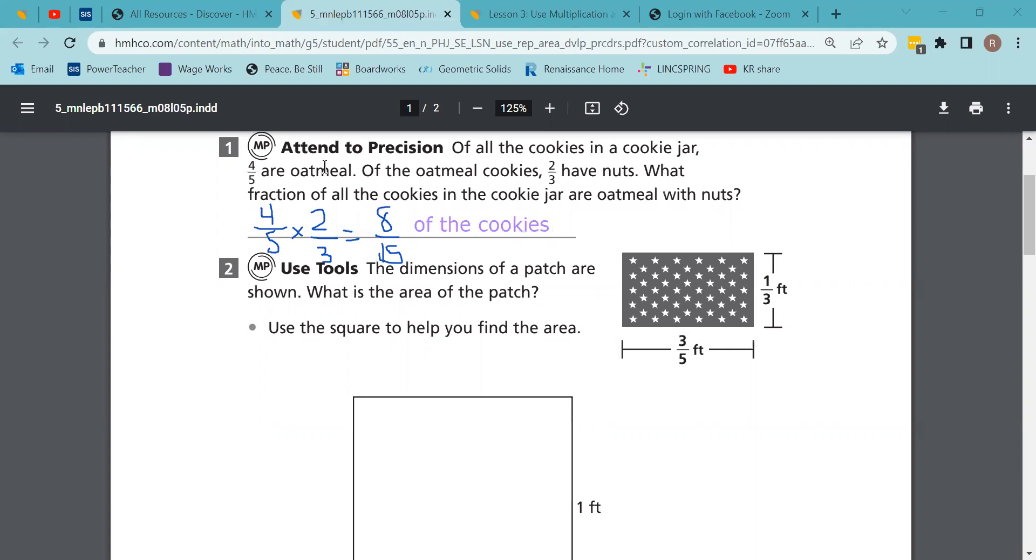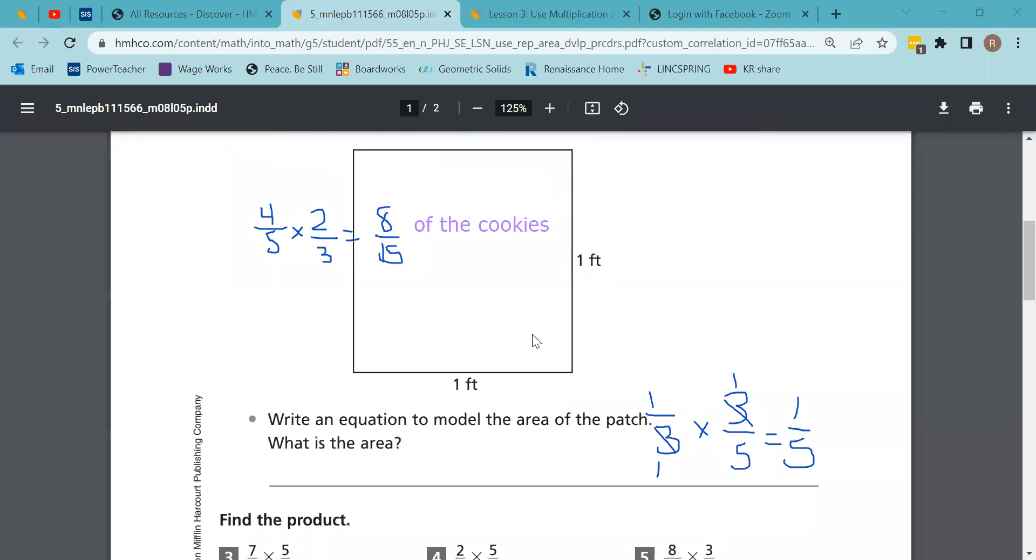Number two: The dimensions of a patch are shown. What is the area of the patch? The area is length times width, or base times height. One-third times three-fifths - I'm going to cross cancel, divide by three, divide by three. We end up with one-fifth of a square foot or foot squared.